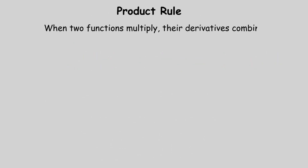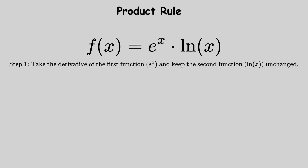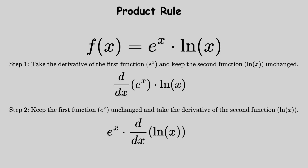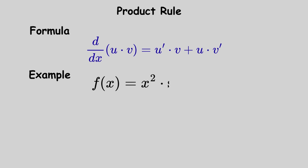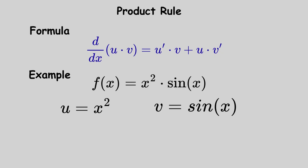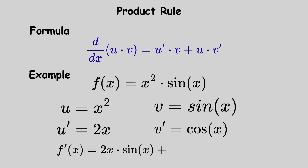The product rule is used when two functions are multiplied. Take the derivative of the first times the second unchanged, plus the first unchanged times the derivative of the second. The formula is: the derivative with respect to x of u times v equals u prime v plus u v prime. For example, if f of x equals x squared times sine of x, let u equal x squared and v equal sine of x. Then u prime equals 2x and v prime equals cosine of x, so f prime of x equals 2x sine of x plus x squared cosine of x.